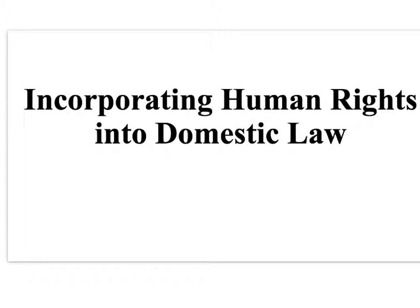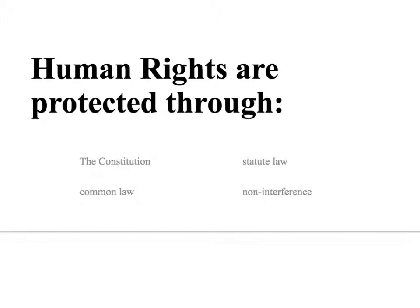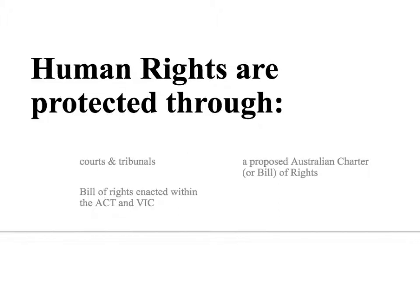Human rights are protected in Australia through the following legal measures: the Constitution, Common Law, Statute Law, and Non-Interference. They are also protected through courts and tribunals, Bills of Rights enacted within the ACT and Victoria, as well as a proposed Australian Charter or Bill of Rights.